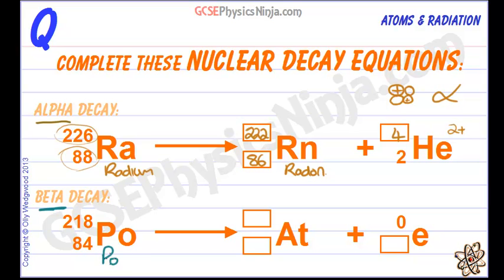Now polonium 218 has a mass number of 218. What happens in beta decay? Well remember that a neutron in the nucleus goes, I don't want to be a neutron anymore.